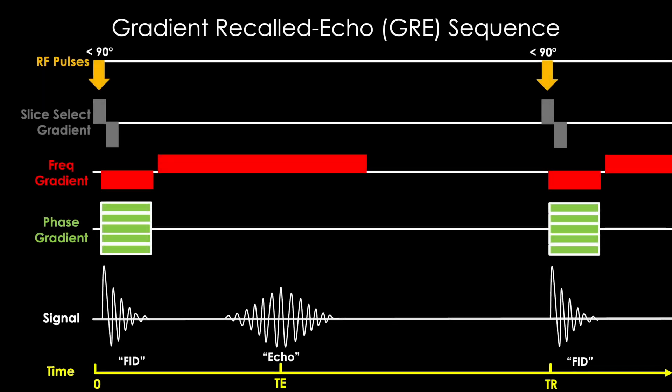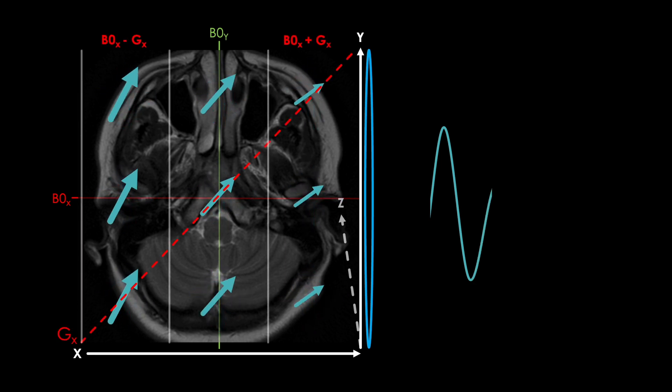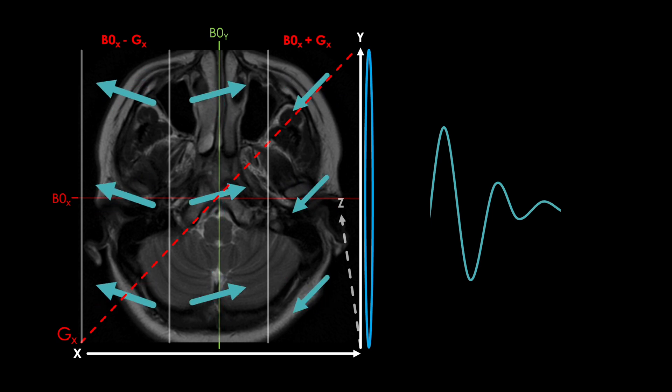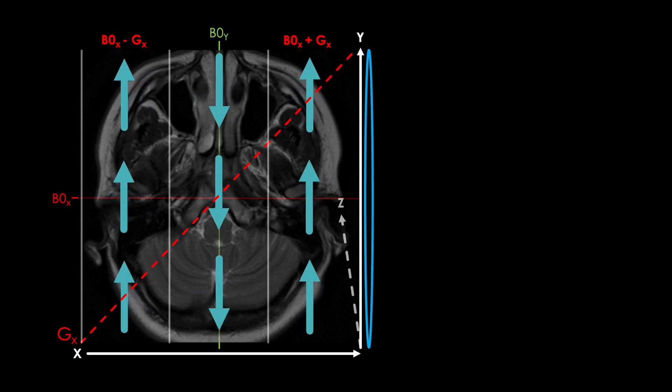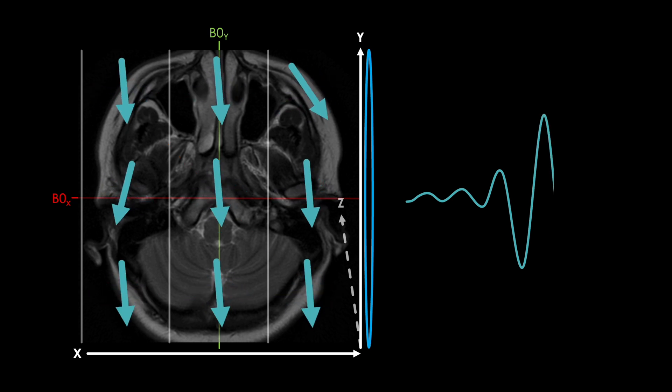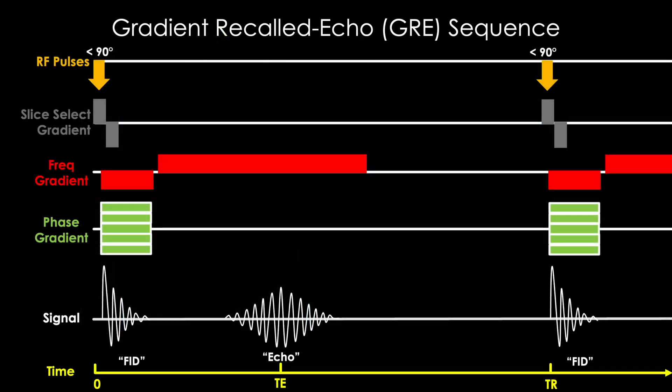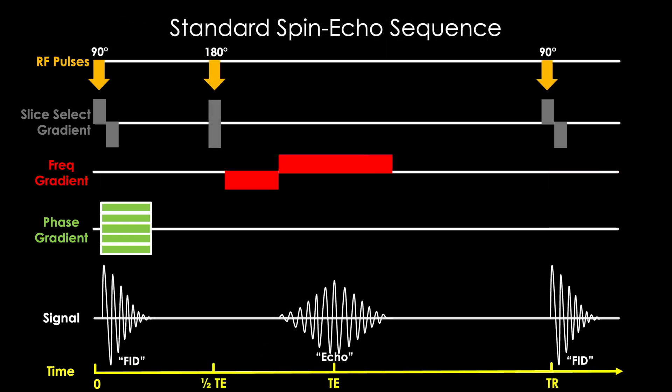As a quick recap on the previous lecture, we developed what we called the gradient recalled echo where we came upon two critical points. The first being that anytime we apply a gradient field we cause our protons to precess at different rates causing dephasing which degrades our signal. But perhaps most importantly, we learned that if we reverse this gradient field with a so-called rephasing gradient, we're able to somewhat reverse this dephasing, bringing our protons back into phase with one another to produce an echo. Naturally we call this our gradient recalled echo or GRE for short, and it's unique in that it does not need a 180 degree rephasing pulse at one half TE to produce an echo as we need it in our spin echo sequences.